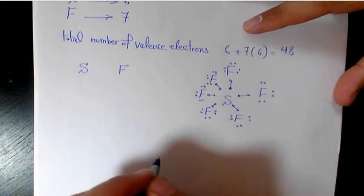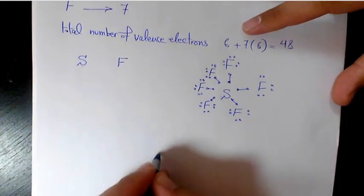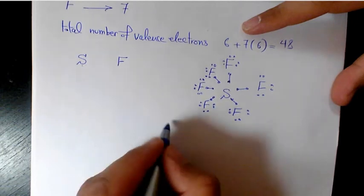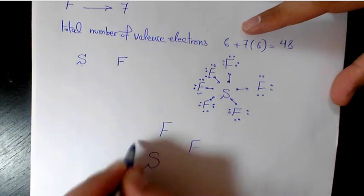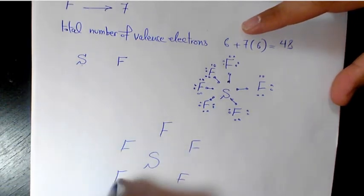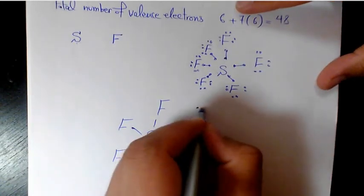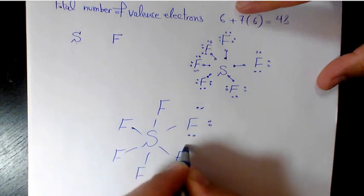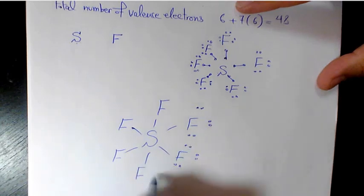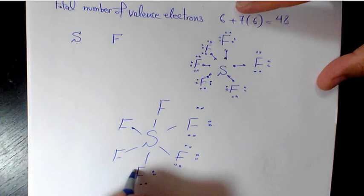And the Lewis structure is going to be basically S single bonded with all fluorines, and we have 3 lone pairs on each of these fluorine elements.